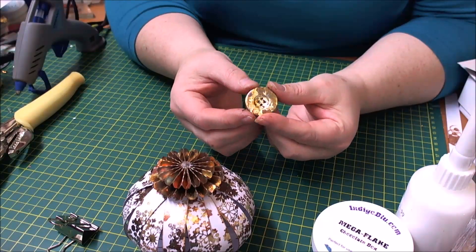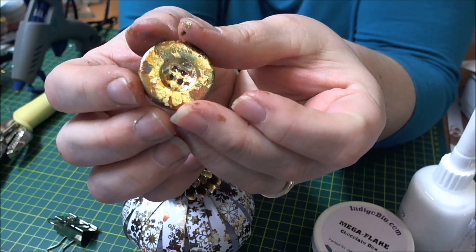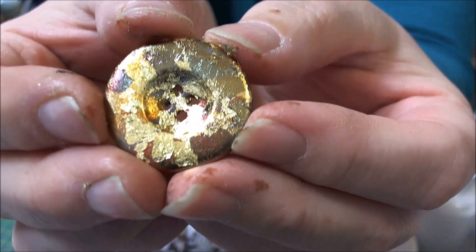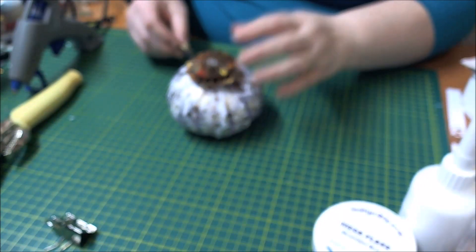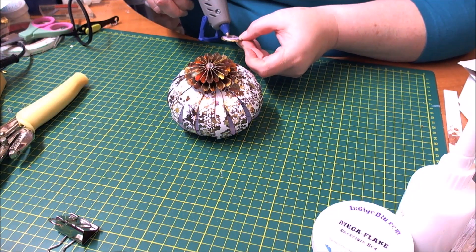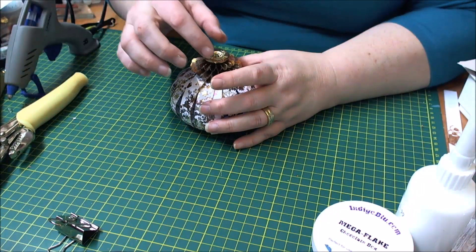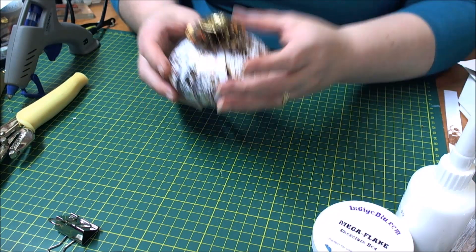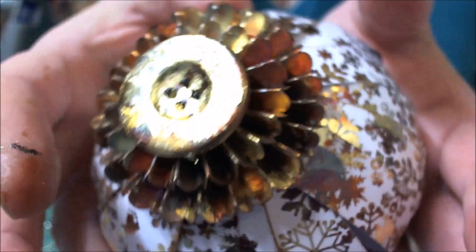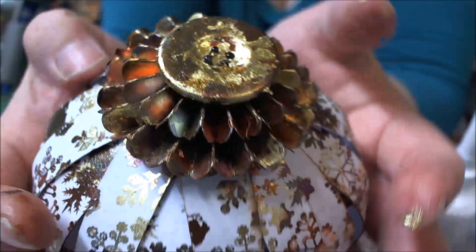So what I've done is I've gone ahead and I have taken a button and I've put some Mega Flake on it. Flitter glue then Mega Flake, so it gives you a nice shiny button. You can see that there. And then I'm just going to apply this directly to the top of our project here with some hot glue. Just to finish off. The top of our, now I'm hoping you can see this okay, the top of our chocolate box Christmas ornament. It's really pretty. So there you have it.